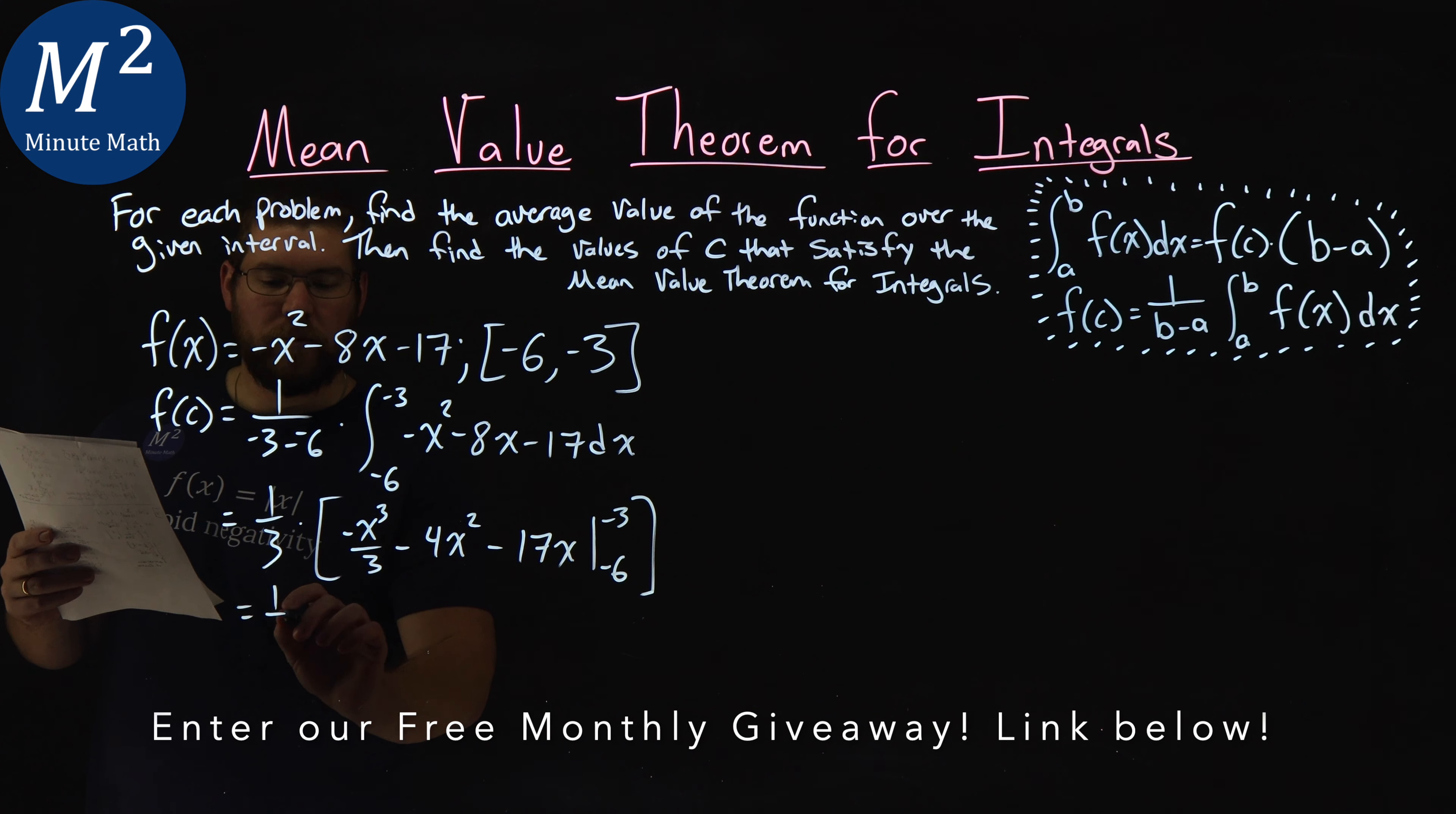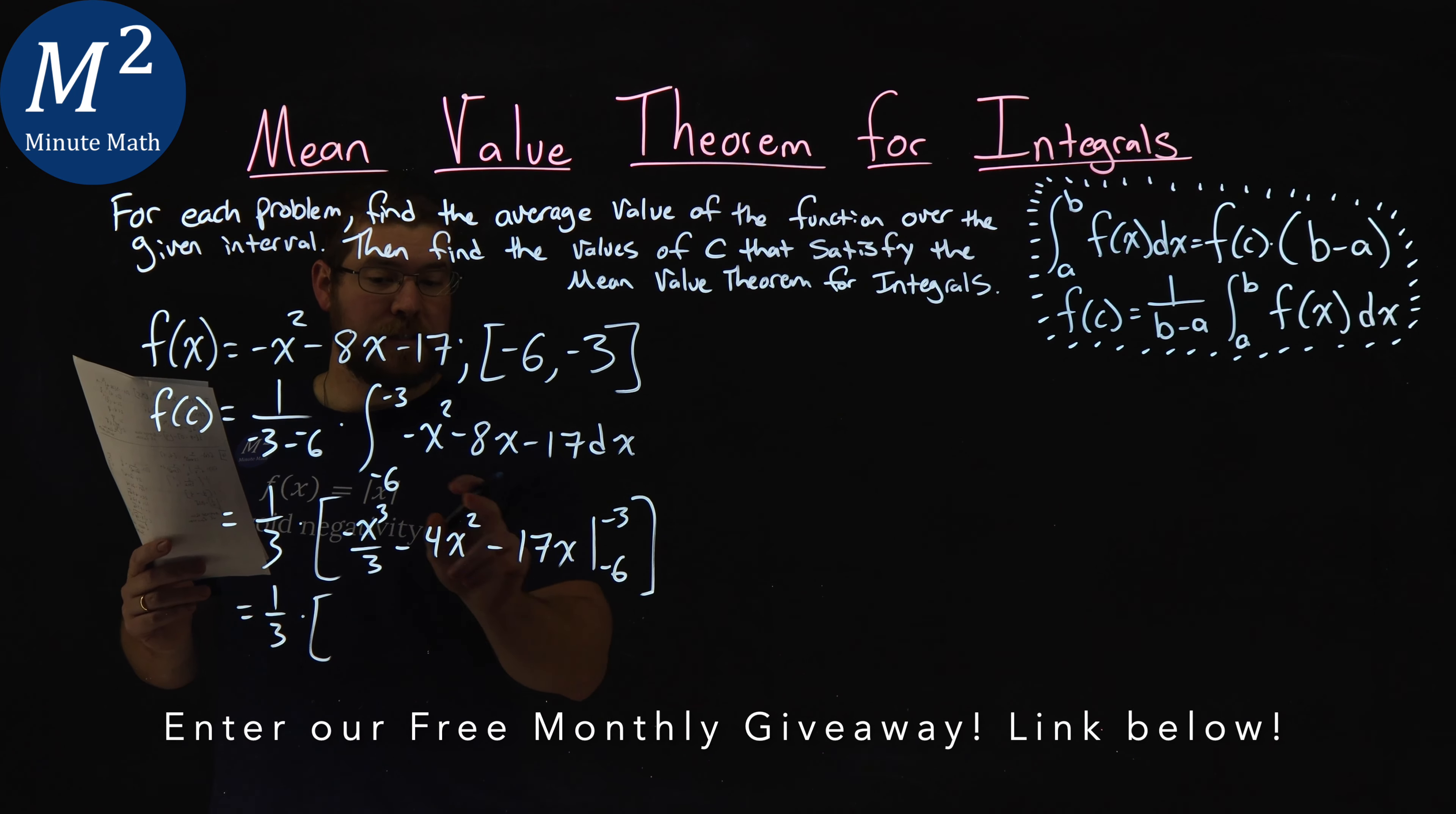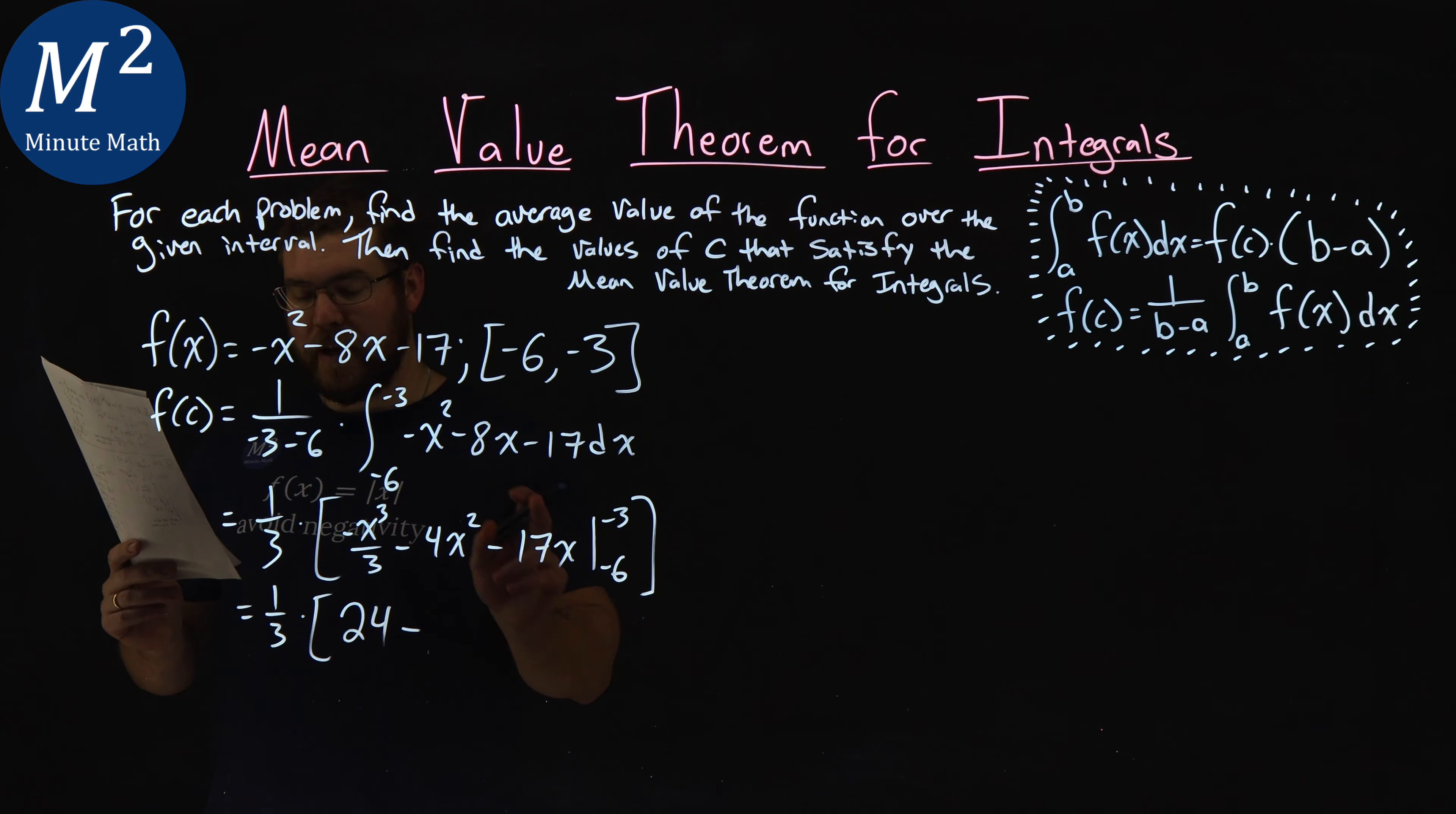What the rules tell us: we keep the 1 third down here. We plug negative 3 first in for x. When I plug negative 3 in for x of our function and simplify, I got 24. When I subtract, we plug negative 6 in. When I plug negative 6 in for x, I got a positive 30.